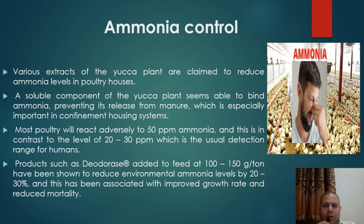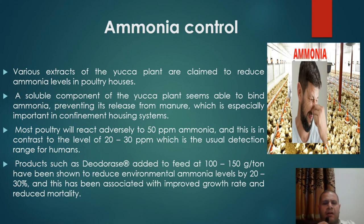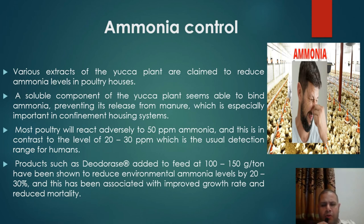The next feed additive is ammonia-controlling compounds. Various extracts of the yucca plant are claimed to reduce ammonia levels in poultry houses. A soluble component of the yucca plant seems able to bind ammonia, preventing its release from manure, which is especially important in confinement housing systems. Most poultry will react adversely to 50 parts per million ammonia, in contrast to the 20–30 ppm which is the usual detection range for humans. Products such as Deodorase, added to feed at 100–150 g per tonne, have been shown to reduce environmental ammonia levels by 20–30%, which has been associated with improved growth rate and reduced mortality.